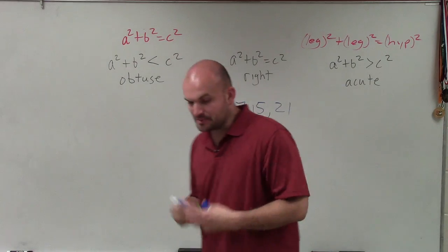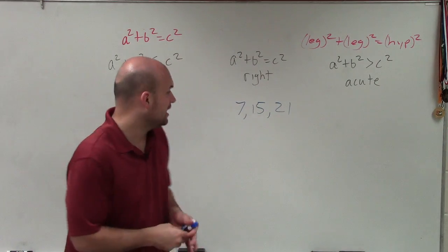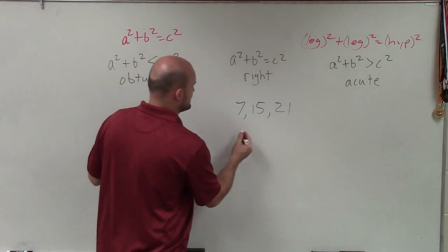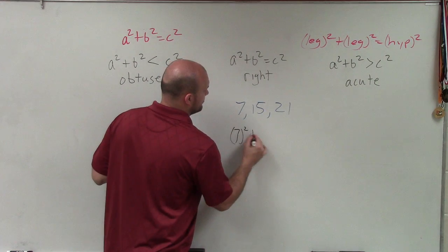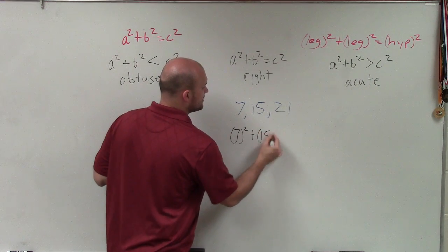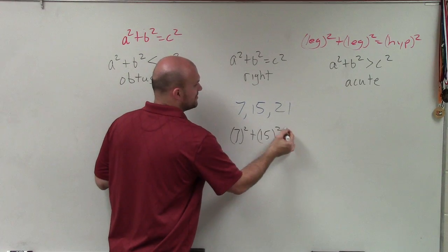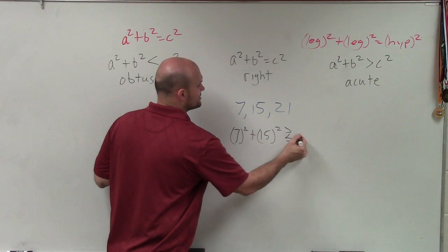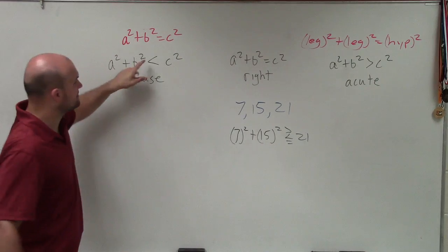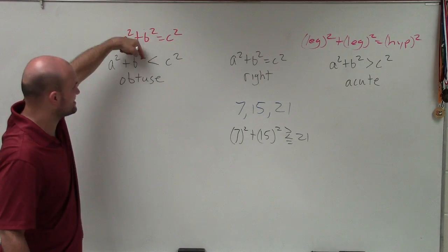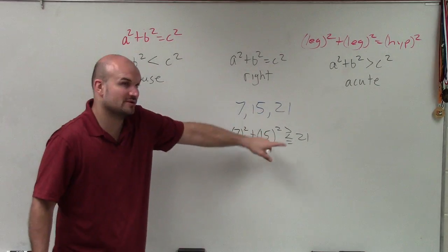You can see I have three lengths. And remember, the largest length is always going to be my hypotenuse. So I can say my leg squared plus my other leg squared is either going to be less than, greater than, or equal to 21 squared. If it's greater than, it's acute. If it's less than, it's obtuse. Or if it's equal to, it's right.